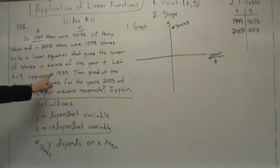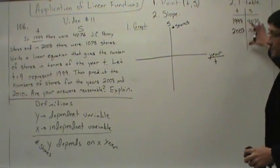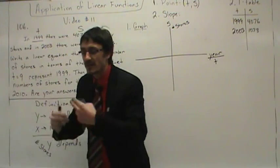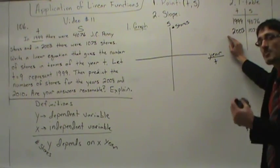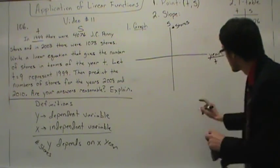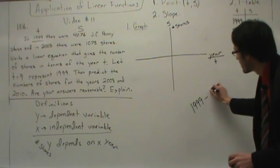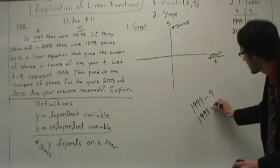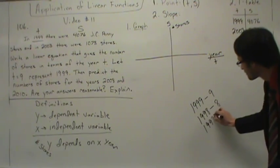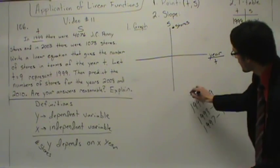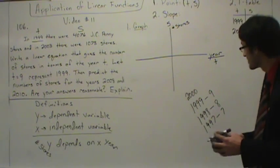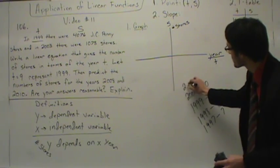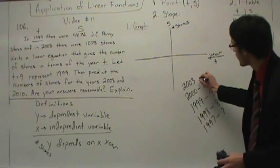Let T equal 9 represent 1999. We don't like to work with big numbers — we like to work with small numbers. We can change 1999 to 9 as long as we are consistently changing all of the years. So: 1999 is 9, 1998 is 8, 1997 is 7. What is 2000? Some students said 0 — no. 1997 is 7, 1998 is 8, 1999 is 9, so 2000 would be 10. And 2003 would be 13.